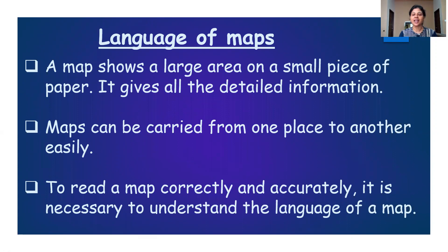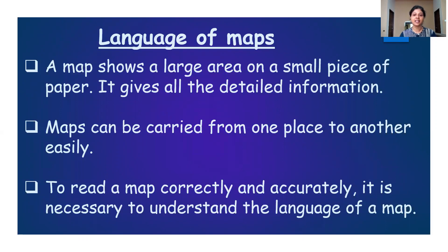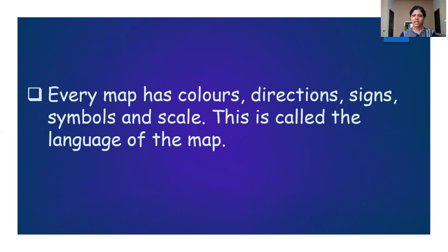A map shows a large area on a small piece of paper. It gives all the detailed information. Maps can be carried from one place to another easily. To read a map correctly and accurately, it is necessary to understand the language of a map. Every map has colors, directions, signs, symbols and scale. This is called the language of the map.